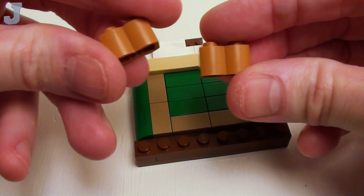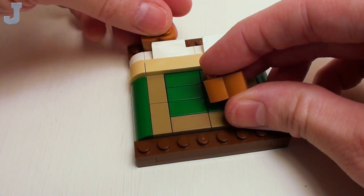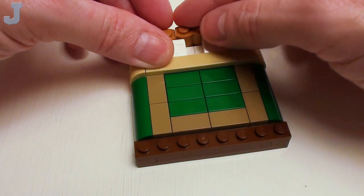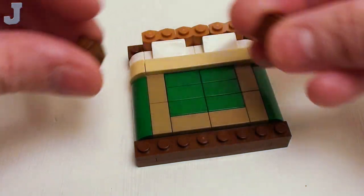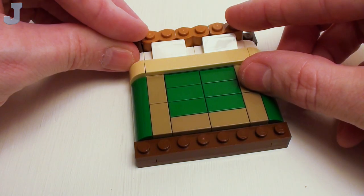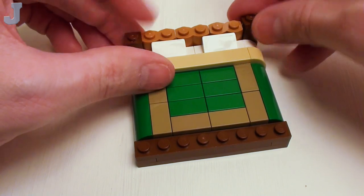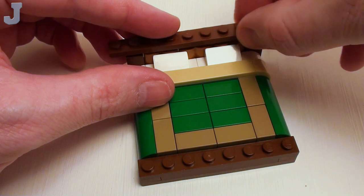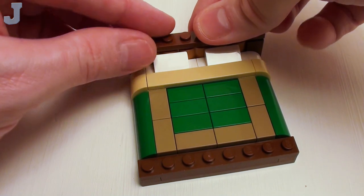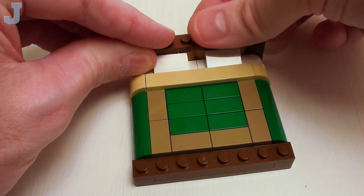For our headboard, we're going to take three 1x2 palisade bricks. We're going to place these right behind the pillows. And on both sides, some 1x1 bricks. Set those down right in there.